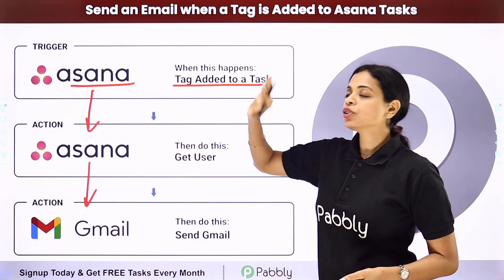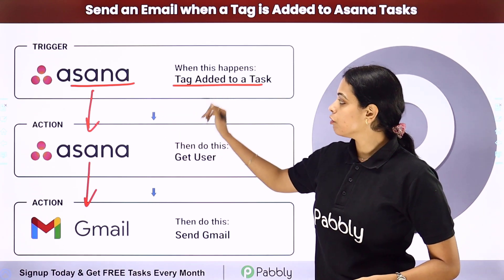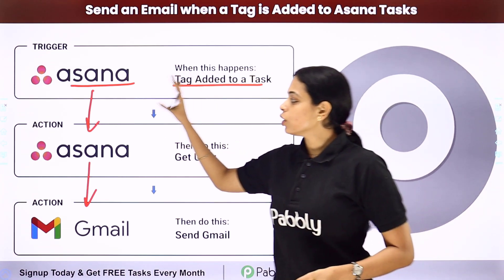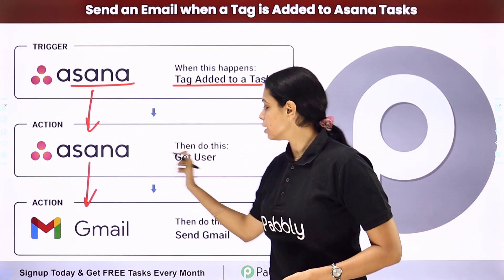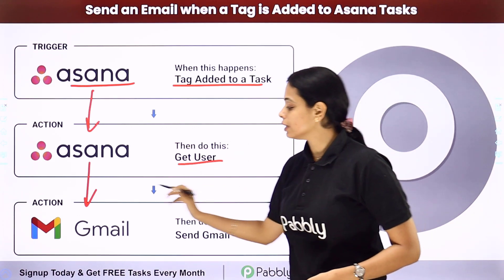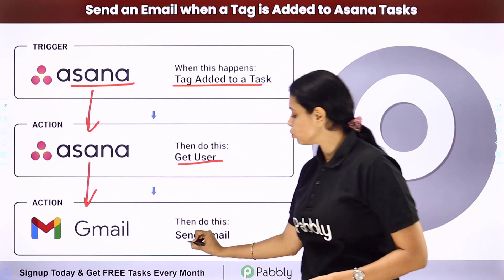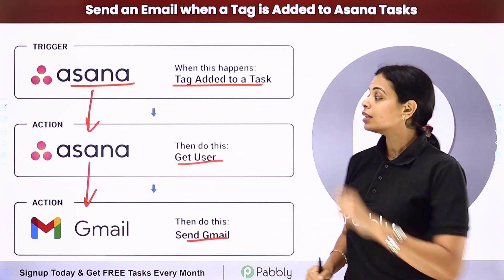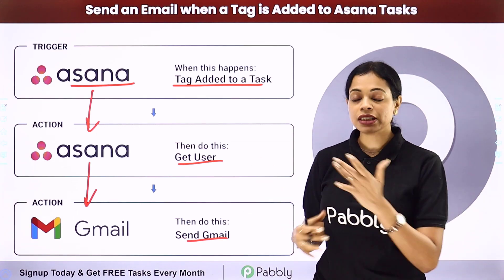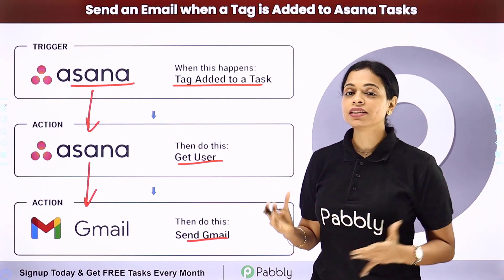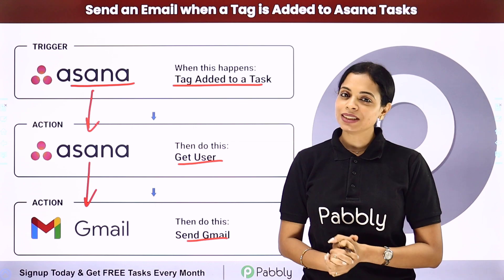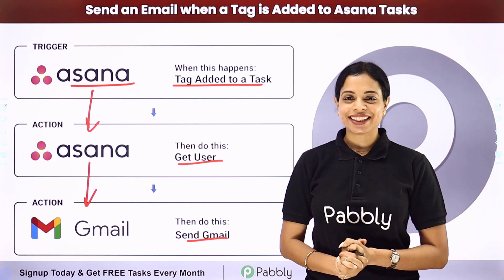Here your trigger application would be Asana, where a tag would be added. Then your action application would be first Asana to get the user details, and then Gmail where you would be able to send an email. Now to understand how you can integrate and automate this entire process, let me take you to my screen.